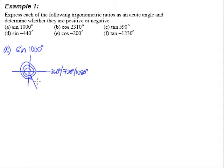So the angle will be represented by a line here, and the acute angle we're most concerned with is this angle — 80 degrees. This tells us that sine 1000 degrees is the same as sine 80 degrees.